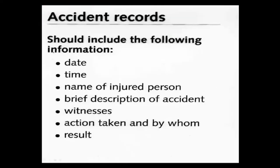Accident records — this is the sort of information you should find in your accident book: the date of the accident, the time of the accident, name of the injured person, brief description of the accident, any witnesses, and action taken by whom. This is the person that would investigate the accident, and they would write into the accident book the action they have taken and the result of the action they have taken.